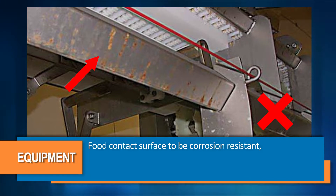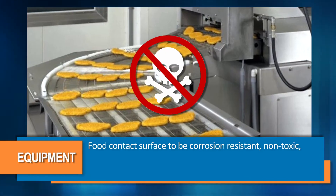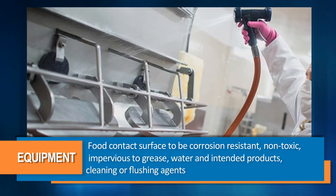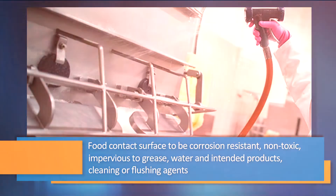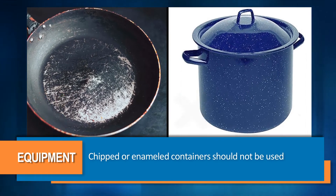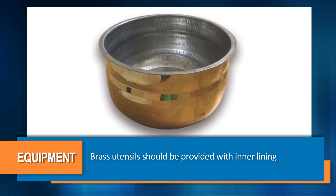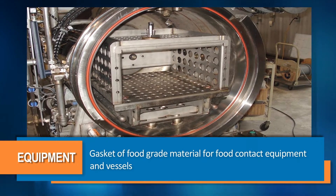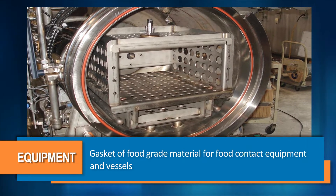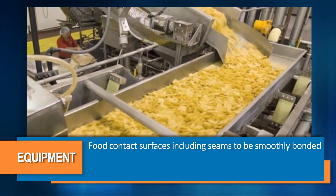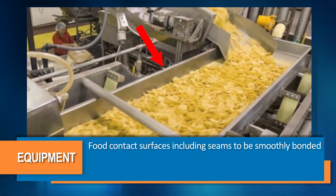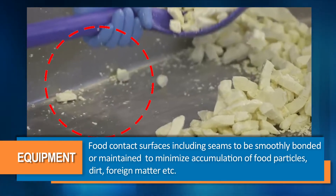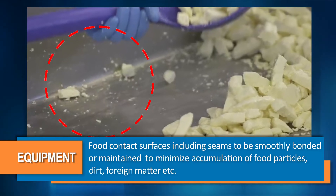The food contact surface of the equipment shall be corrosion resistant, non-toxic, impervious to grease, water and intended products, as well as to cleaning or flushing agents. Chipped or enameled containers should not be used. Brass utensils should be provided with inner lining. Gaskets made of food grade material should be used for food contact equipment and vessels. Food contact surfaces including seams should be smoothly bonded or maintained so as to minimize accumulation of food particles, dirt, and foreign matter.